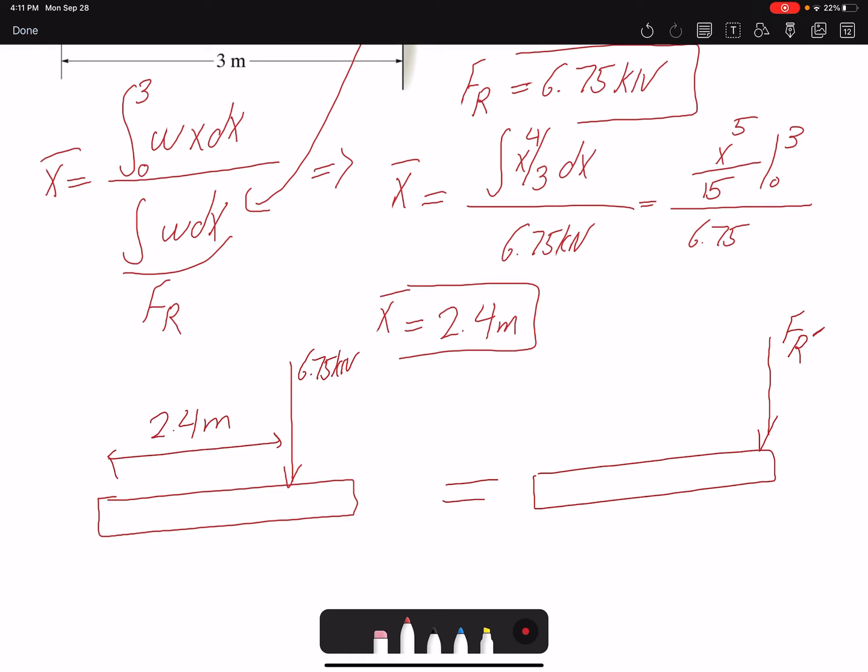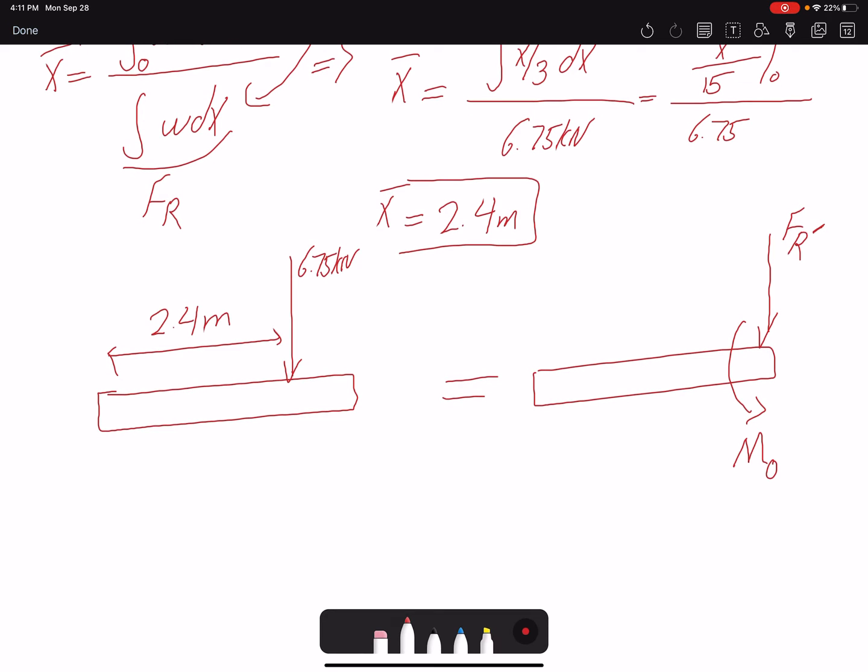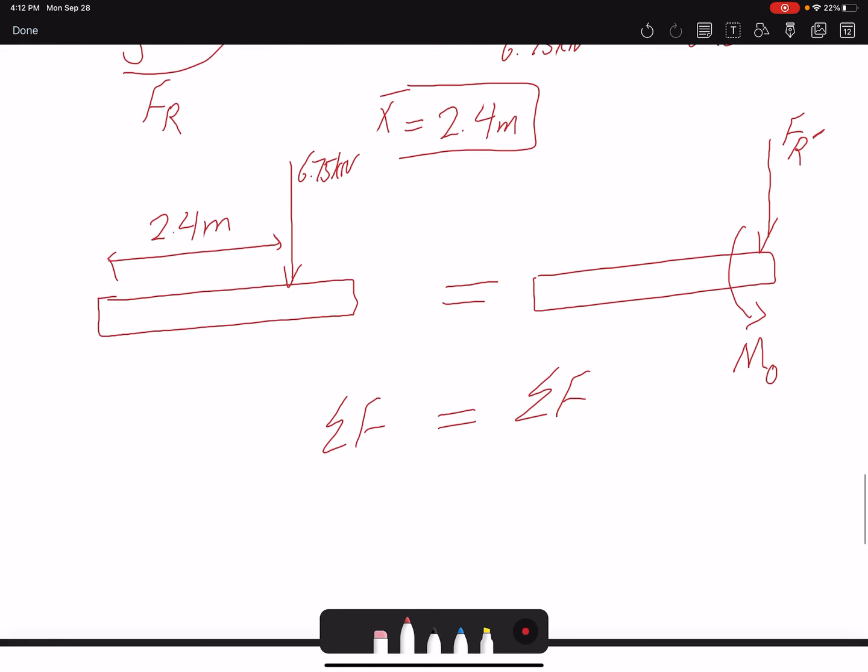But we want to find the load at point O. What would be this FR, or let's call it FR prime, so it would be different from what we earlier defined, and a moment at point O. What would be the equivalent moment and force? For these two beams to be the same, the summation of forces on each side should be the same, and summation of moments on each side must be the same.